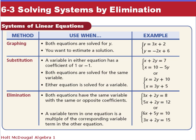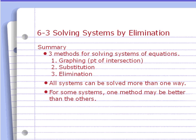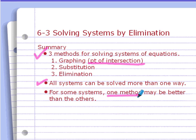Here are the three methods we've looked at — graphing, substitution, or elimination — and which method might be better. Any of these three methods will work, but depending on what you're given, one method might be better than the others. Graphing is probably the one you'll use the least — it's the least accurate. Substitution is nice if you already have one equation solved for a variable. Elimination works well if the terms are already lined up and coefficients of one variable are the same or opposites. All answers are written as an ordered pair, the point of intersection. Bring any questions you have to class, and thank you.